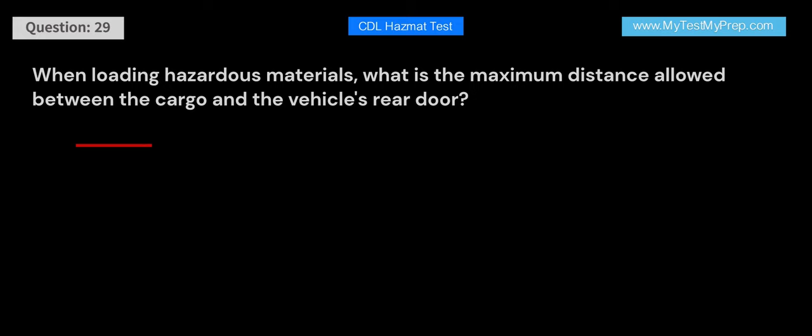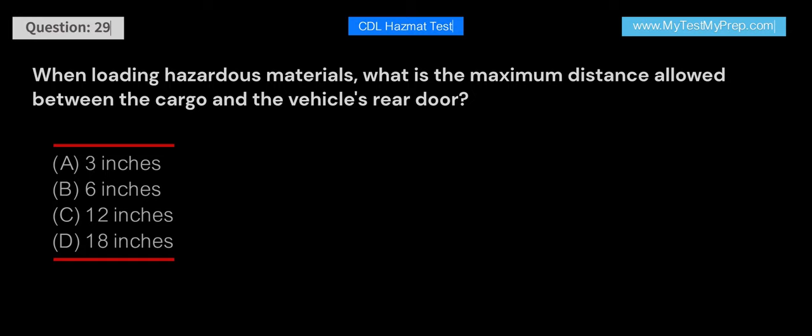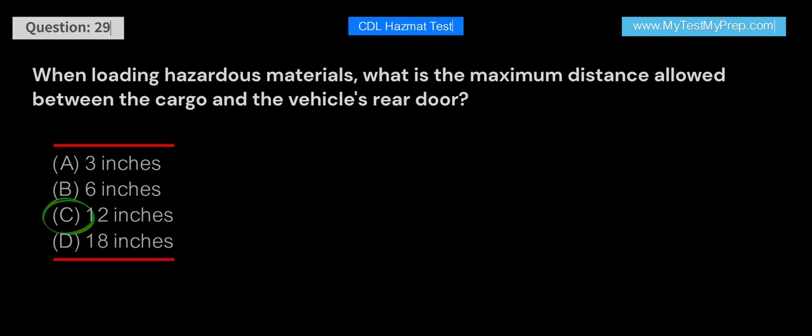When loading hazardous materials, what is the maximum distance allowed between the cargo and the vehicle's rear door? A. 3 inches. B. 6 inches. C. 12 inches. Answer: C. When loading hazardous materials, the maximum distance allowed between the cargo and the vehicle's rear door is 12 inches. This distance helps to prevent the cargo from shifting during transport, which can reduce the risk of an accident.